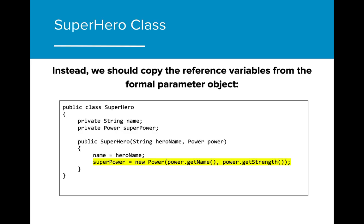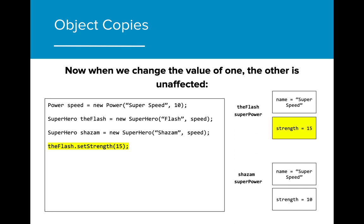Any changes that are made to the superpower object will only affect the individual superpower for each superhero. When creating constructors with objects as parameters, it's important to keep this in mind, so that we are only changing the objects that we intend to. Now with our new initialization, when we change the strength attribute in the flash, the shazam superpower strength will not change.